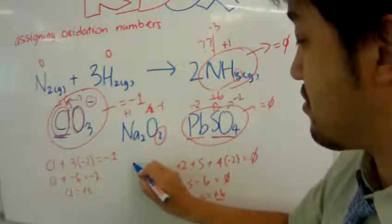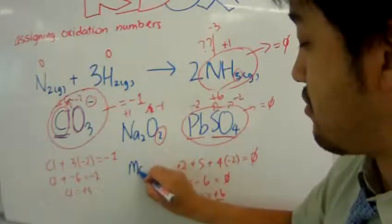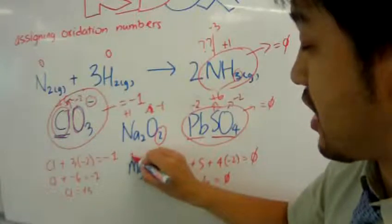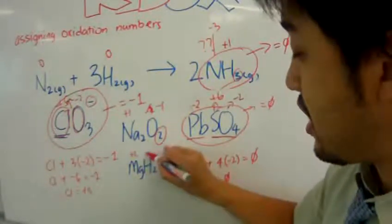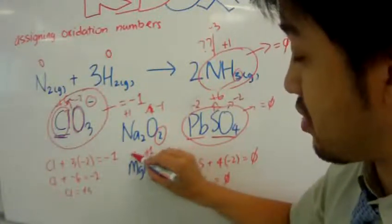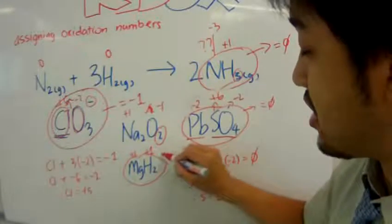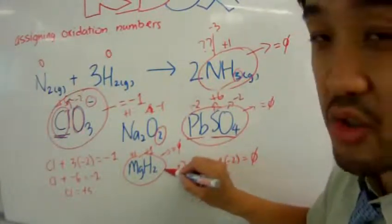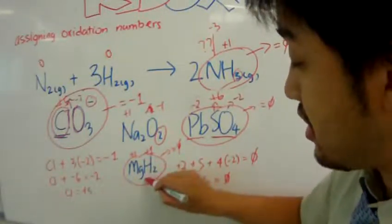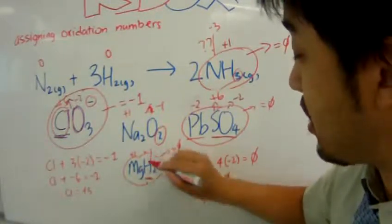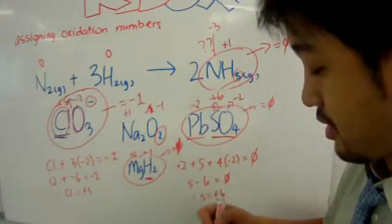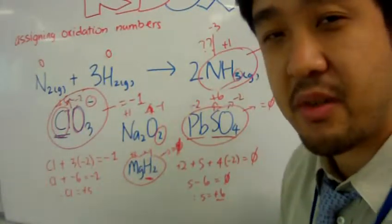Let's talk about MgH₂. What's the oxidation number? Magnesium is an ion so it has an oxidation number of plus two. You might think hydrogen will be plus one, but the entire compound must have an oxidation number of zero, and plus two plus 2×(+1) does not equal zero. So take a look — it's a hydride, so it must be minus one. Because 2 + 2×(−1) = 0. There you go — examples of assigning oxidation numbers.